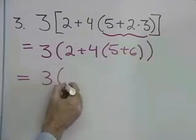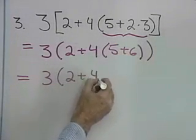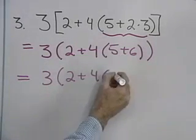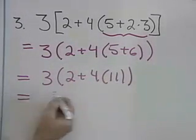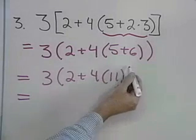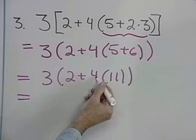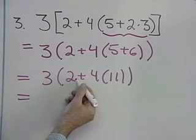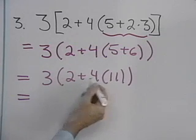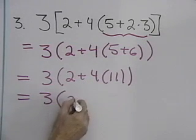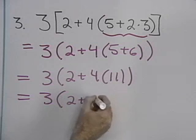Now this is 3 times 2 plus 4 times 5 plus 6 is 11. And now I'm going to work my way back out inside these parentheses. Here I have 4 times 11, and here I have addition, so I'm going to do the multiplication first. 3 times 2 plus 4 times 11 is 44.